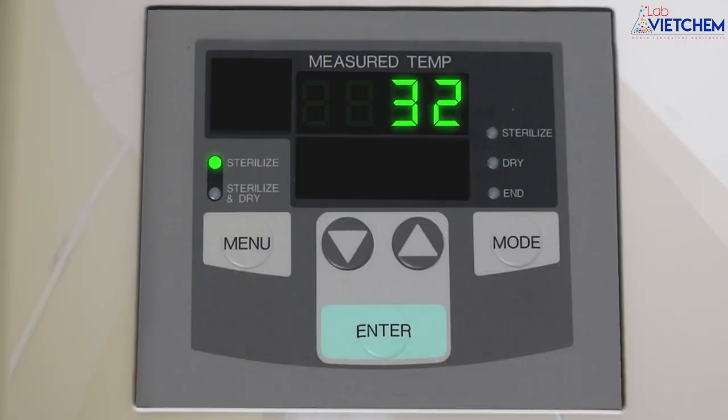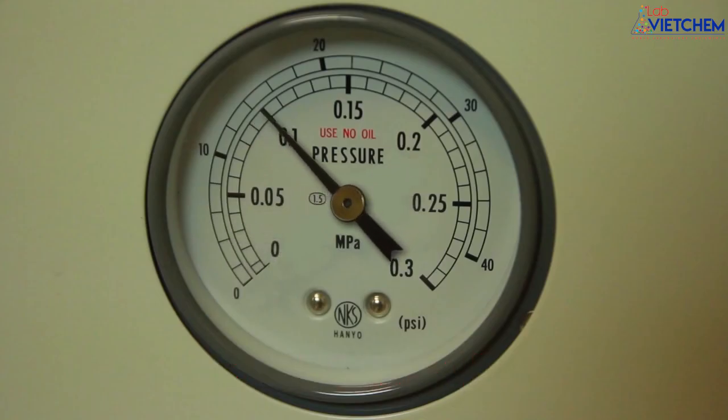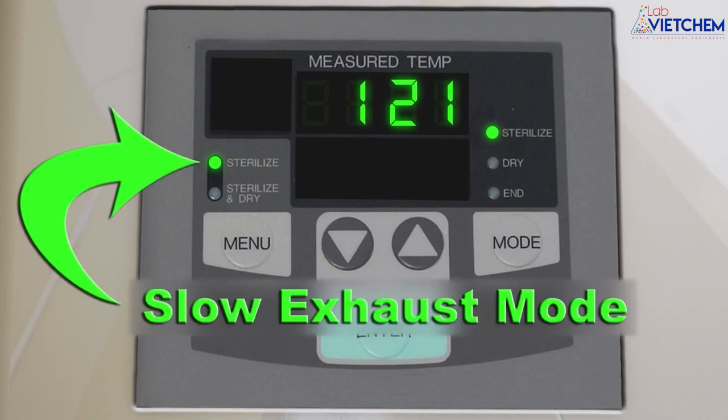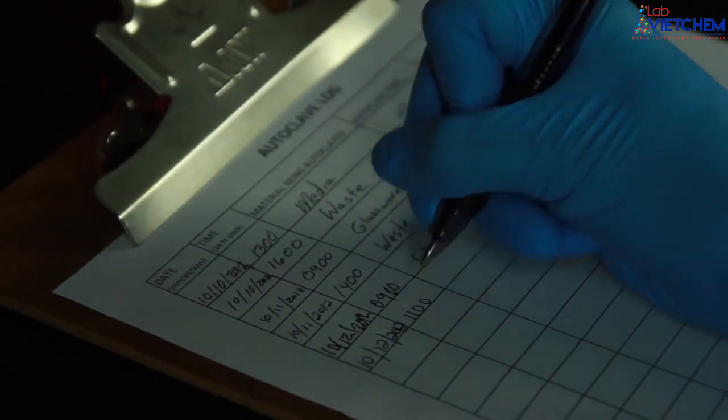Use the control panel to set the mode to sterilize, the temperature to 121 degrees celsius, and the pressure to 15 psi. The slow exhaust mode prevents the liquid from boiling over and out of the flask. Run the autoclave for at least 15 minutes.